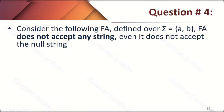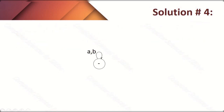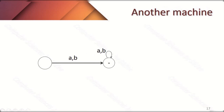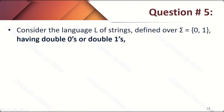Question number four: the FA does not accept any string — not even the null string. The condition is that the machine accepts no string at all. Since a machine only accepts words when it has a final state, we simply do not create a final state, and the condition is fulfilled. No final state means no word is accepted. This is the required automaton for question four.